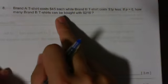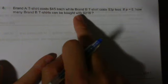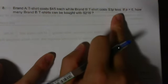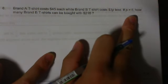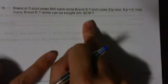Next question. Brand A t-shirt costs $45 each while brand B t-shirt costs 3p less. If p equals 6, how many brand B t-shirts can be bought with $216?